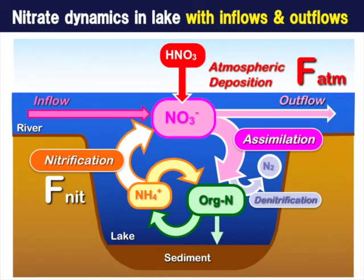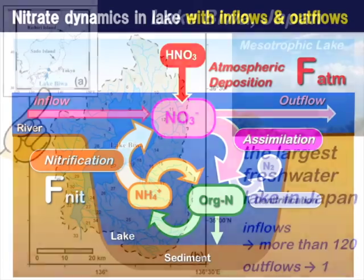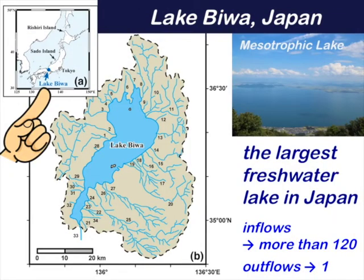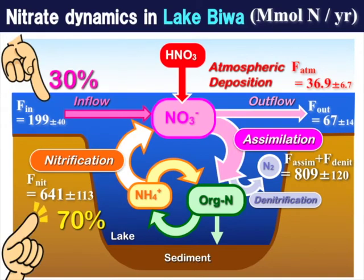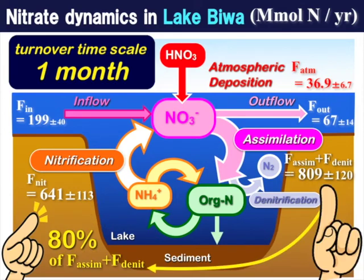The aim of our present study is to quantify nitrification rates in a more general lake with inflows and outflows — Lake Biwa, the largest freshwater lake in Japan. We successfully applied this new method to the lake and revealed that nitrate supplied by inflows occupies only less than 30% of nitrate supplied into the lake's water column. Besides, about 80% of the metabolized nitrate was remineralized to nitrate again via rapid turnover of nitrate in the lake.